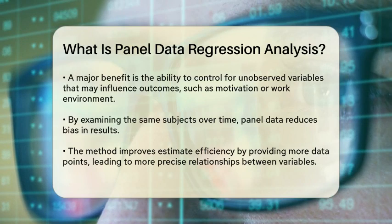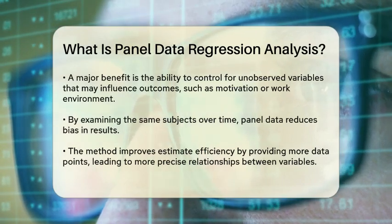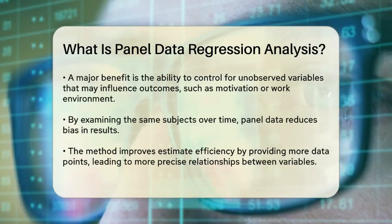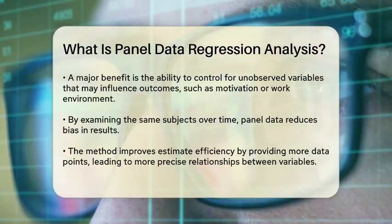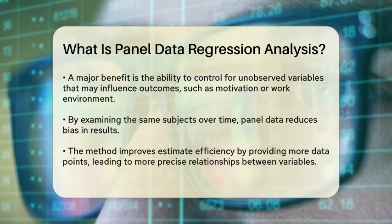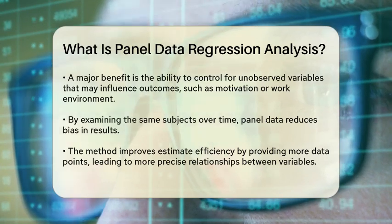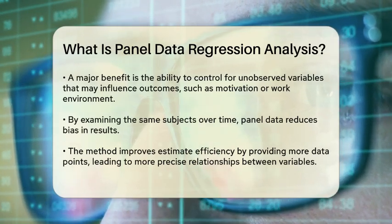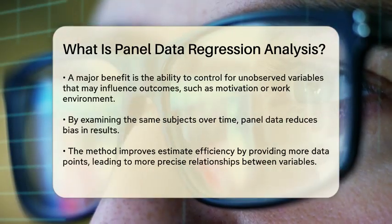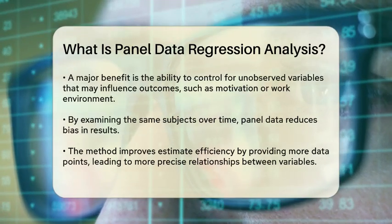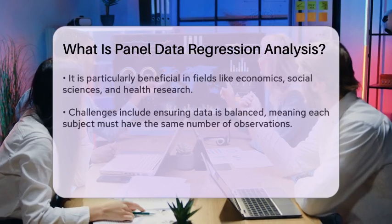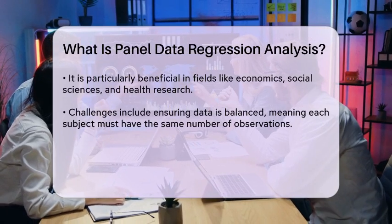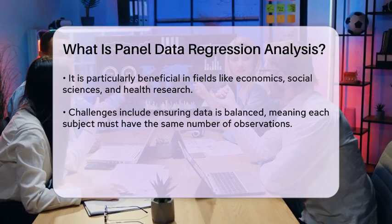One of the key advantages of panel data regression analysis is its ability to control for unobserved variables that may influence the outcome. For instance, if you are studying the impact of training programs on employee productivity, there may be factors like motivation or work environment that are not directly measured but still affect productivity. Panel data helps to account for these unobserved characteristics by examining the same subjects over time, thereby reducing bias in the results. Additionally, this method can improve the efficiency of estimates.